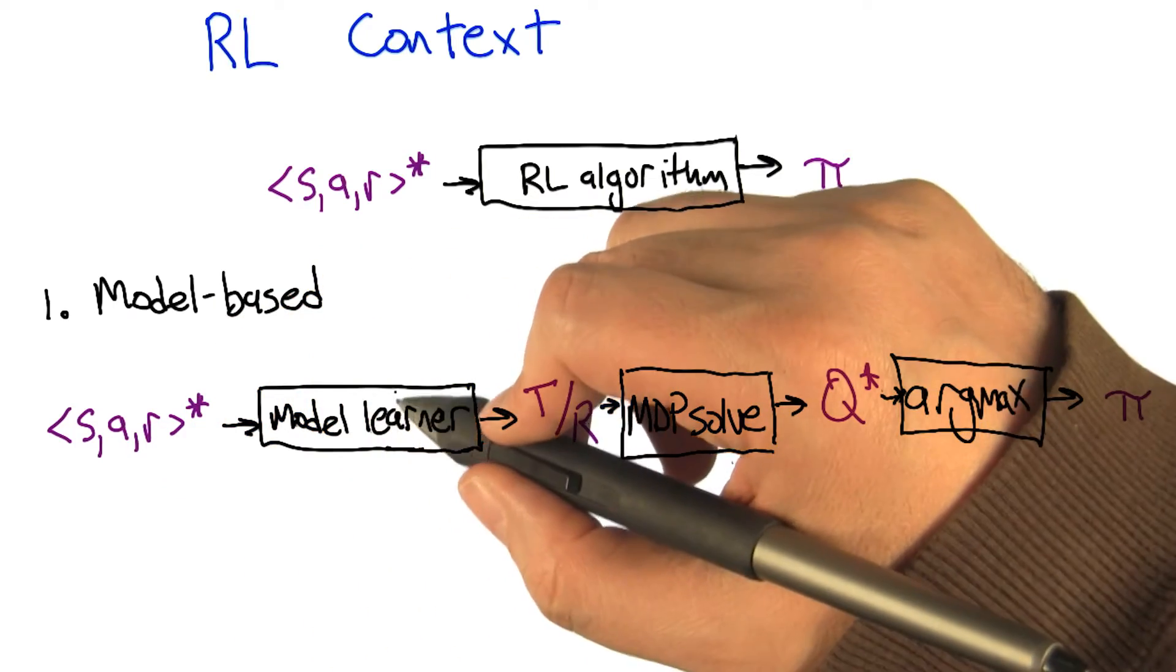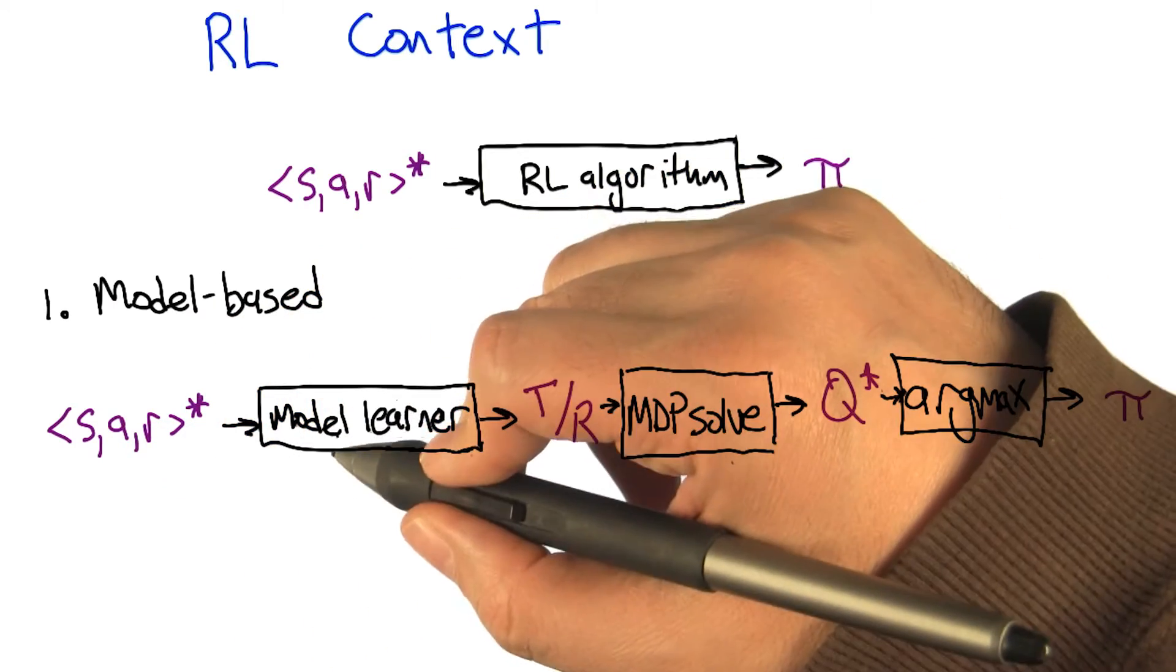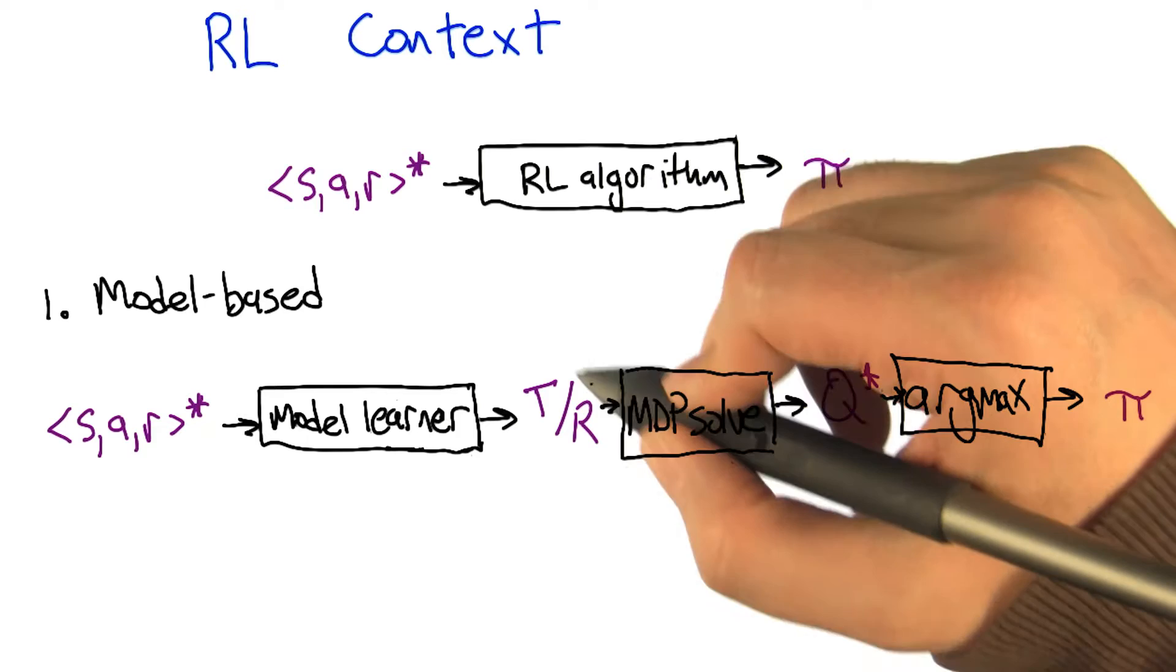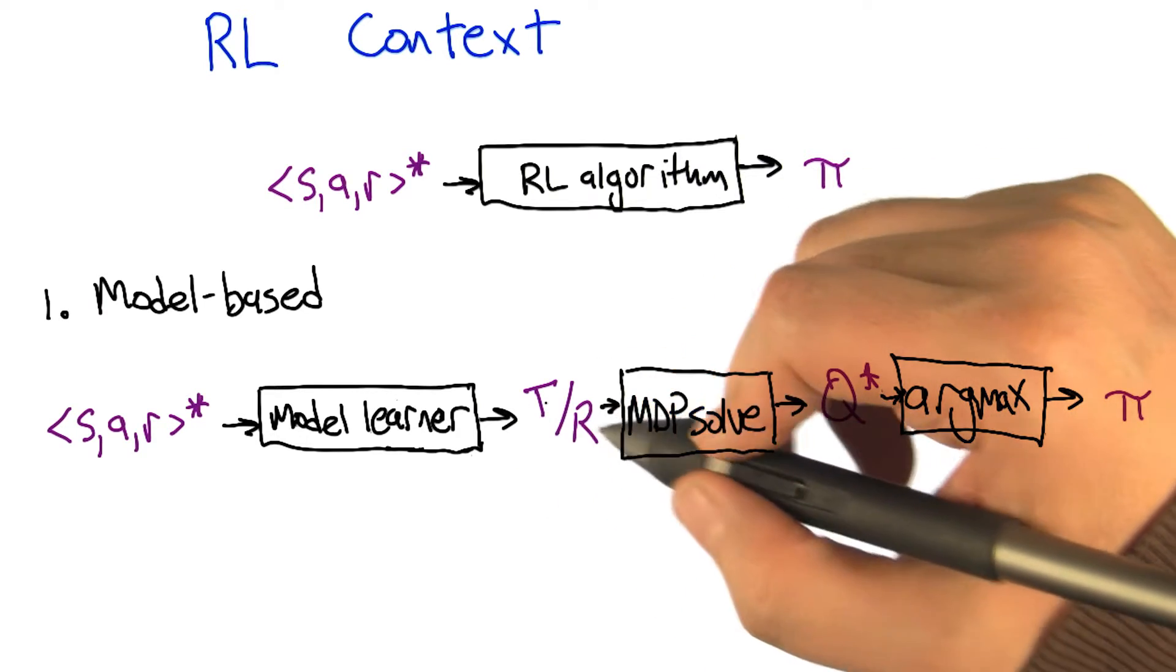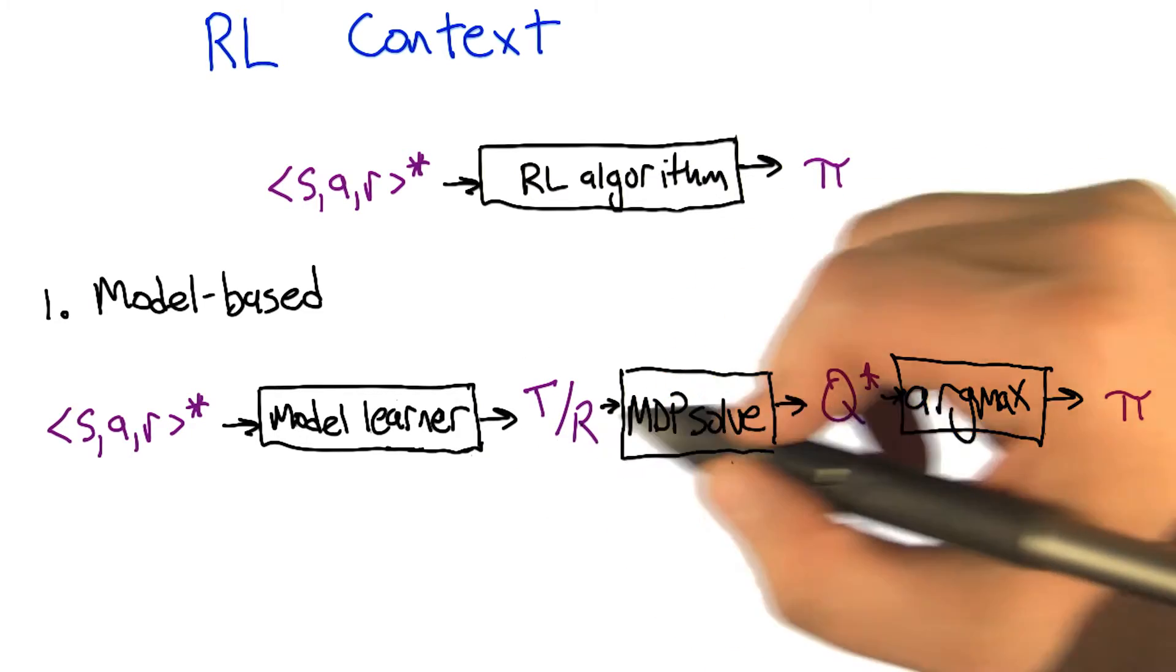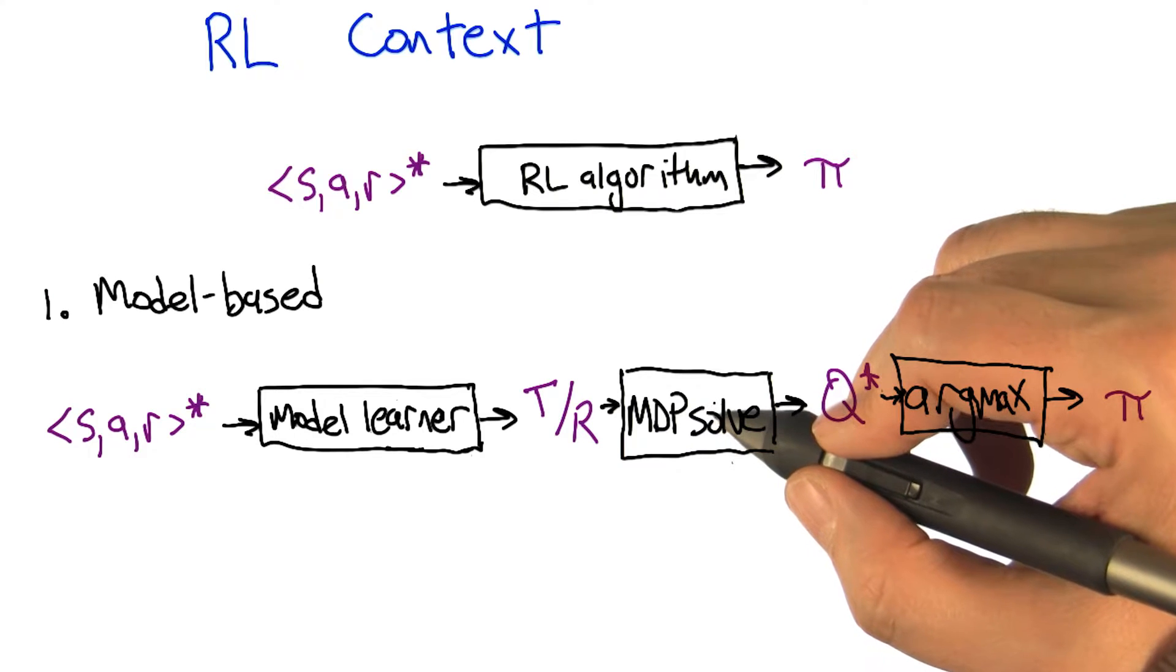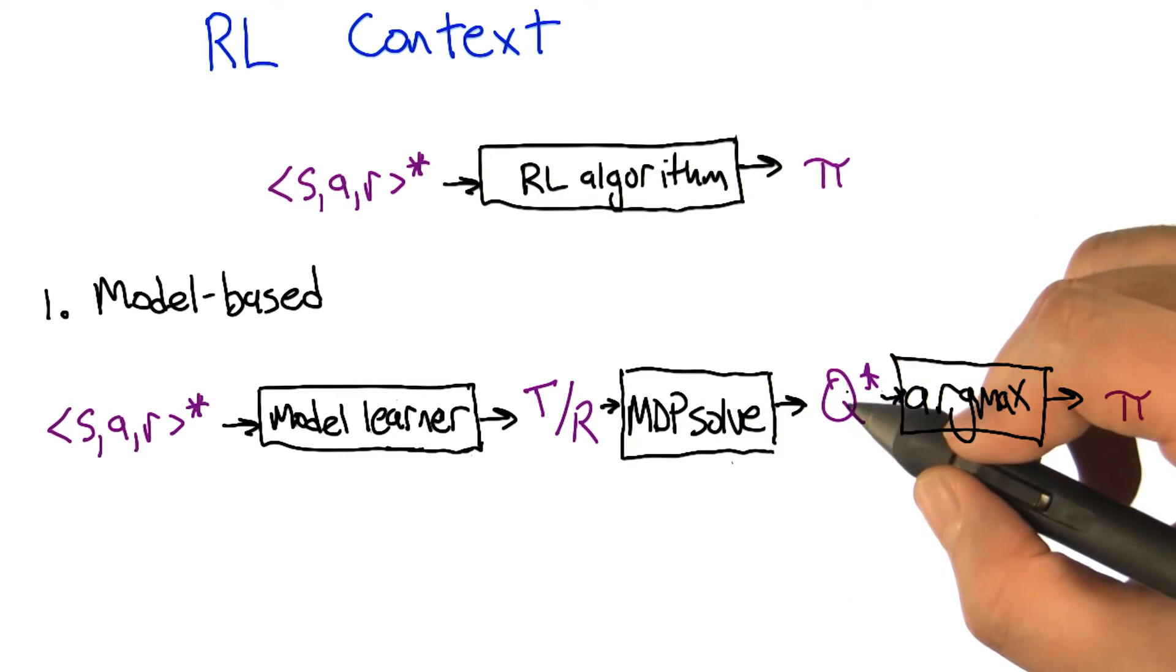So model-based reinforcement learning algorithm takes the state action reward tuples that it gets and sends them to a model learner, which learns the transitions and rewards. Those transition rewards, once you've learned them, you could put through an MDP solver, like we've talked about,